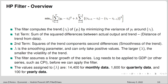The filter computes the trend of the series YT by minimizing the variance of YT around the trend. The first term is the squared differences between the actual output and the trend — this is basically the distance of the trend from the data. The second term is the squares of the trend component's second differences, representing the smoothness of the trend.